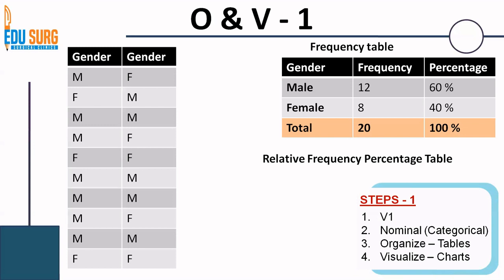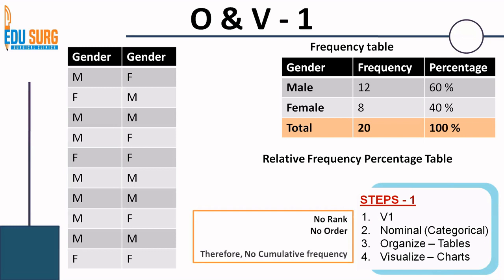Why is it known as relative frequency? Because the ratio of male and female — the total has to be 1. The total of all the categories that you study in categorical data has to be 1 or 100%, and that is why it is known as a relative frequency percentage table. We understand that there is no rank and no order in nominal data, and therefore you do not have cumulative frequency in nominal or categorical data. This is a very important point to remember.